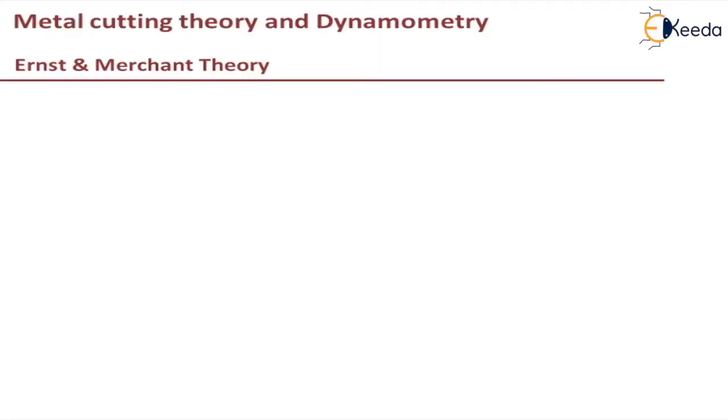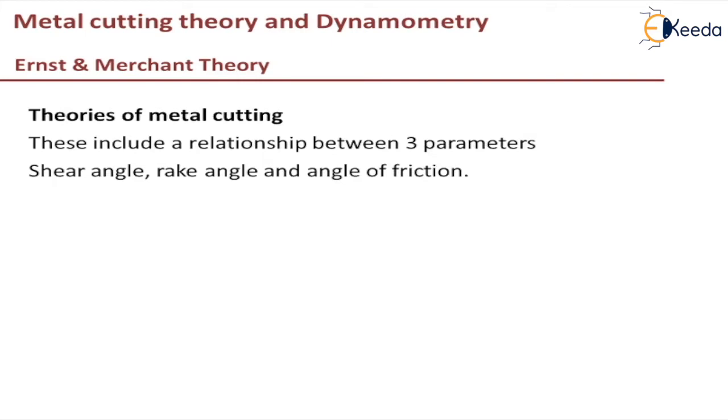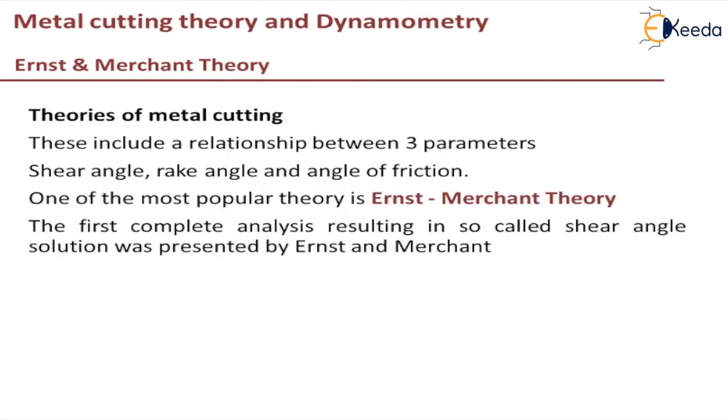There are many theories of metal cutting. These include a relationship between three parameters: shear angle, rake angle, and angle of friction. One of the most popular theories is Ernst and Merchant's theory because they are the first to provide a complete analysis resulting in a so-called shear angle solution.